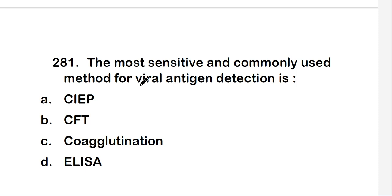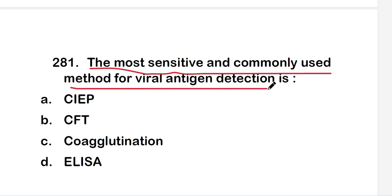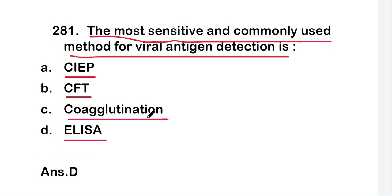Welcome to a new video on MCQs on virology — this is Part 15 of the virology series. The first question is: the most sensitive and commonly used method for viral antigen detection is CIEP, CFT, coagglutination, or ELISA? The right answer is option D, ELISA. ELISA is the most sensitive and commonly used method for viral antigen detection.